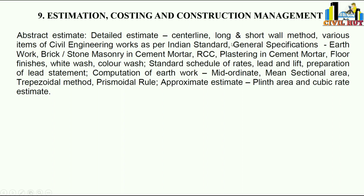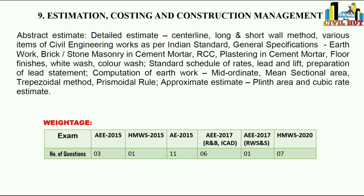Next is Estimation, Costing, and Construction Management. Topics include materials as per Indian Standards, detail estimates, centre line method, long wall method, short wall method, and items of civil engineering works as per IS codes. Historical counts: 3, 1, 11, 6, 1, 7 — we got 11 questions once in AEE and 7 in HMWS 2020; otherwise lesser. Prepare accordingly.